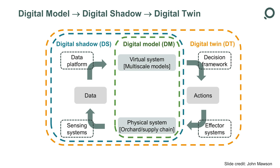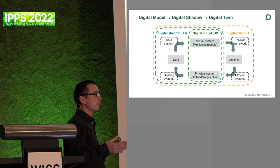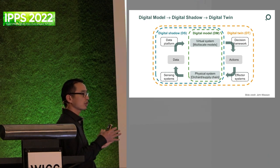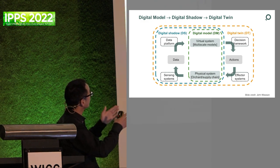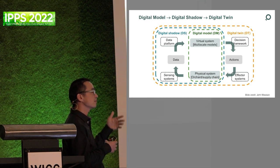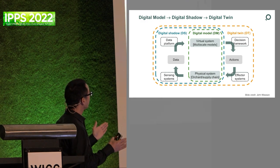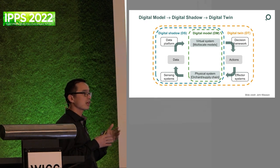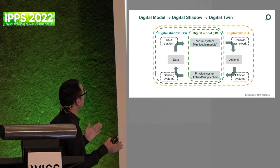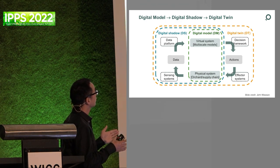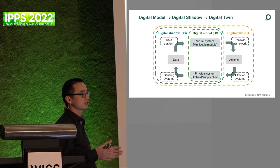Then we build the data platform to store all the information. Based on the complexity of the system and the work we are doing, we can divide this digital horticultural system into three phases. In the first phase, we mainly work on the digital model, simulating the physical system as a virtual system with no direct communication between them. Then we add sensors feeding real-time data from the physical system to the virtual system — this is called a digital shadow. Finally, we deploy the decision framework and effector system like robots in field, completing the digital twin.